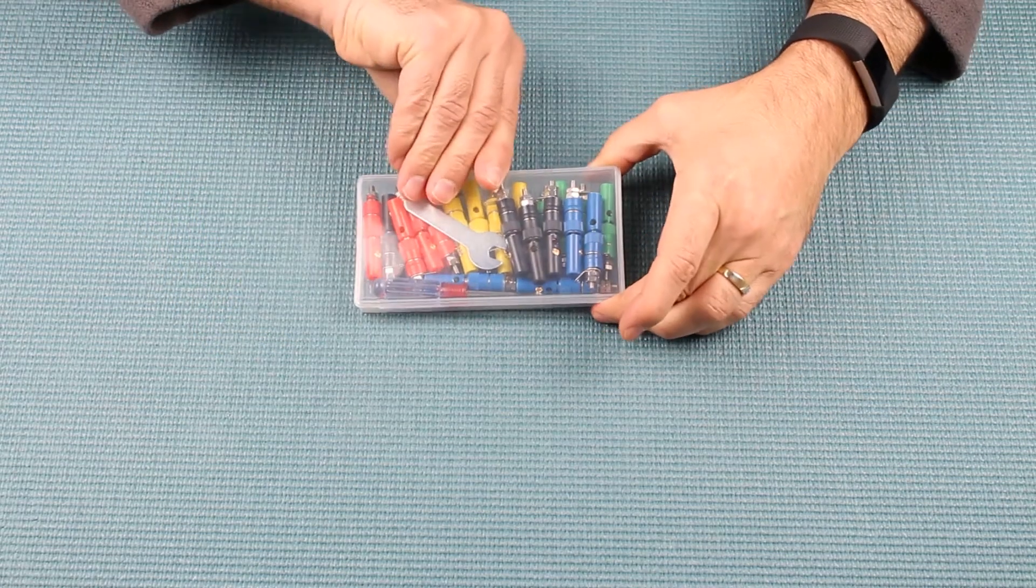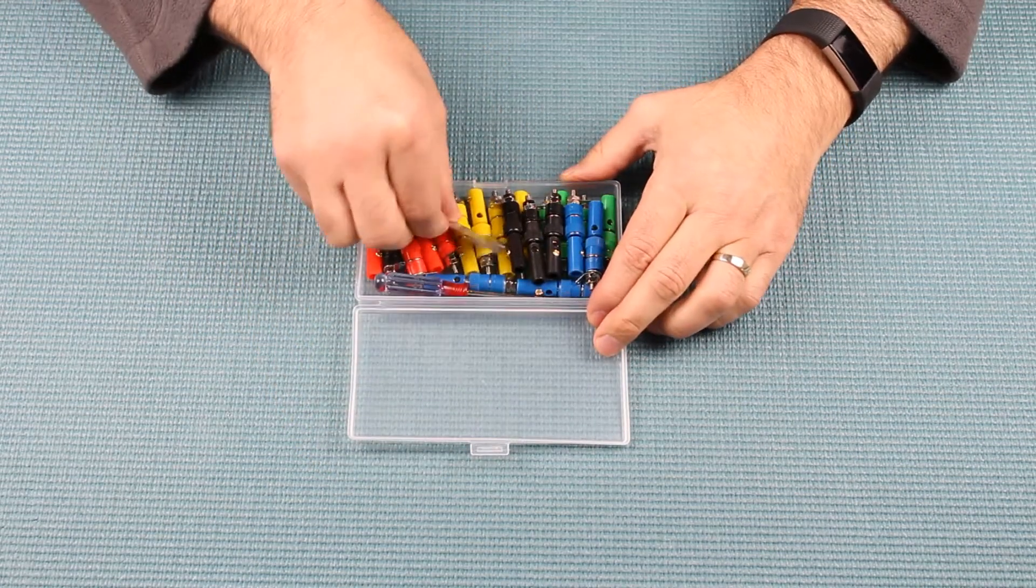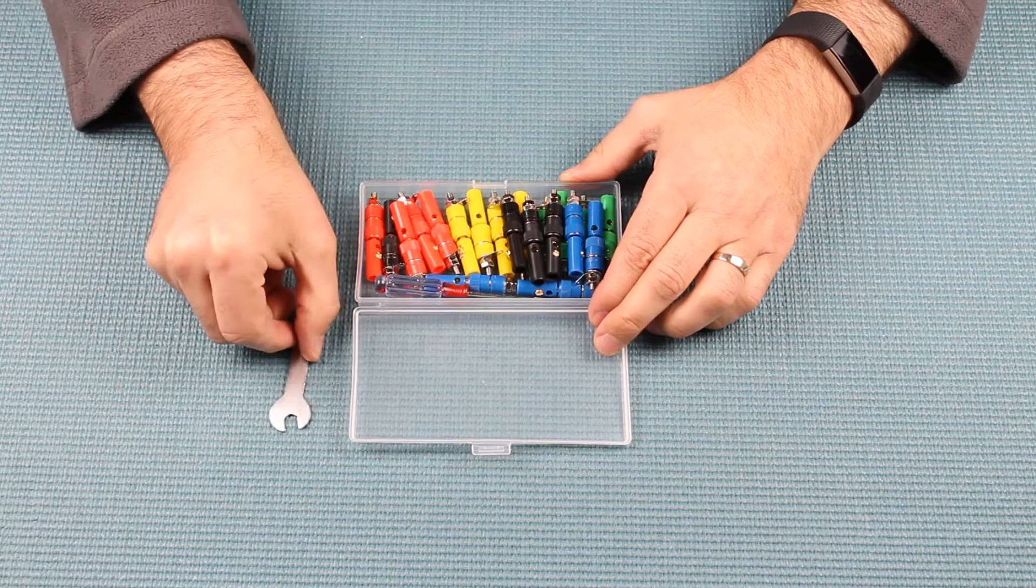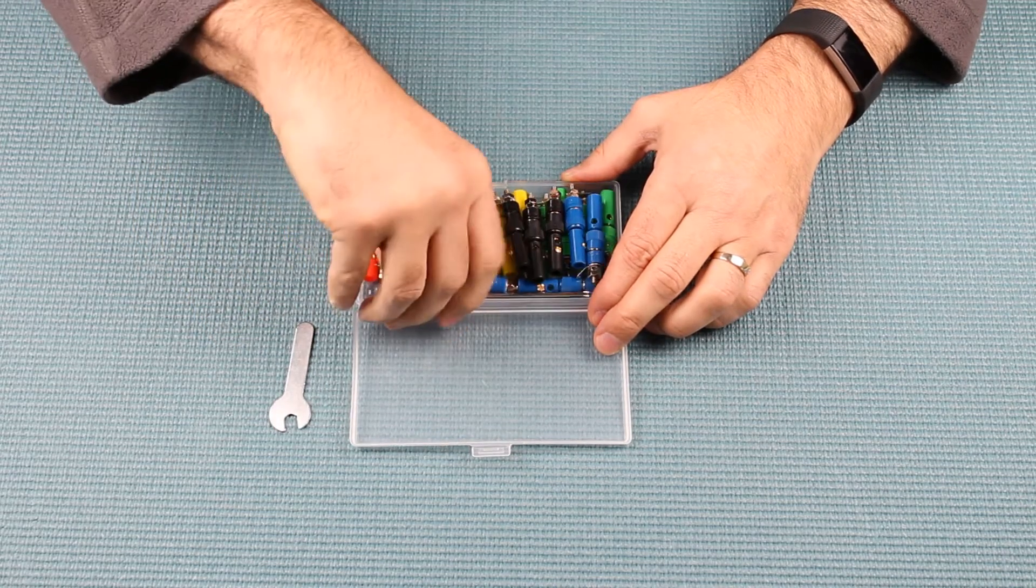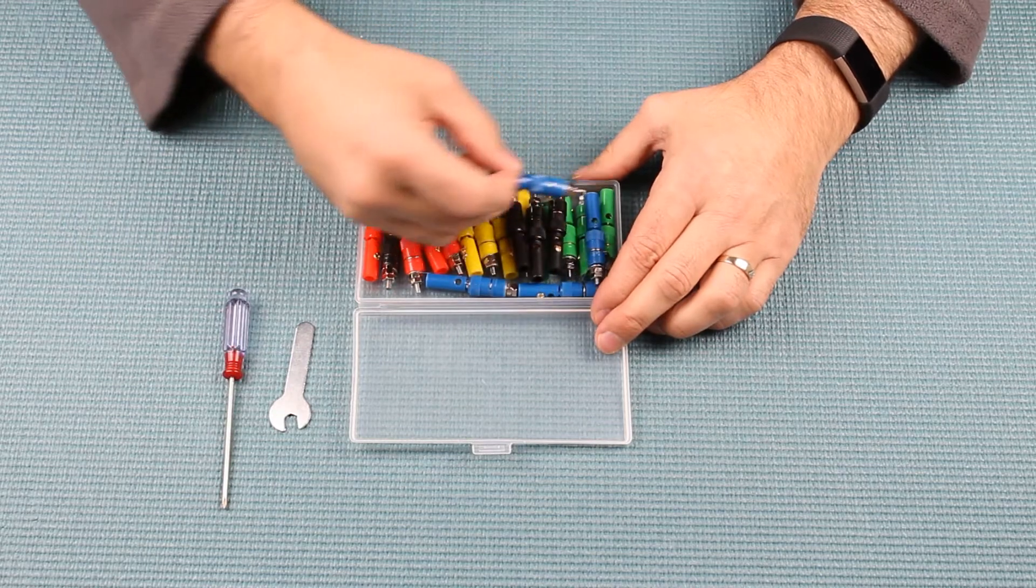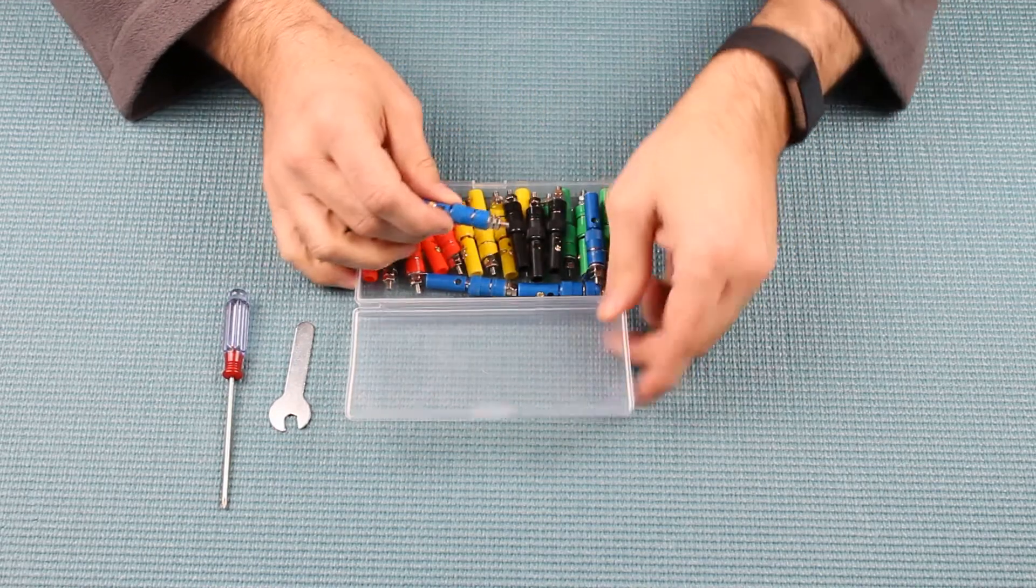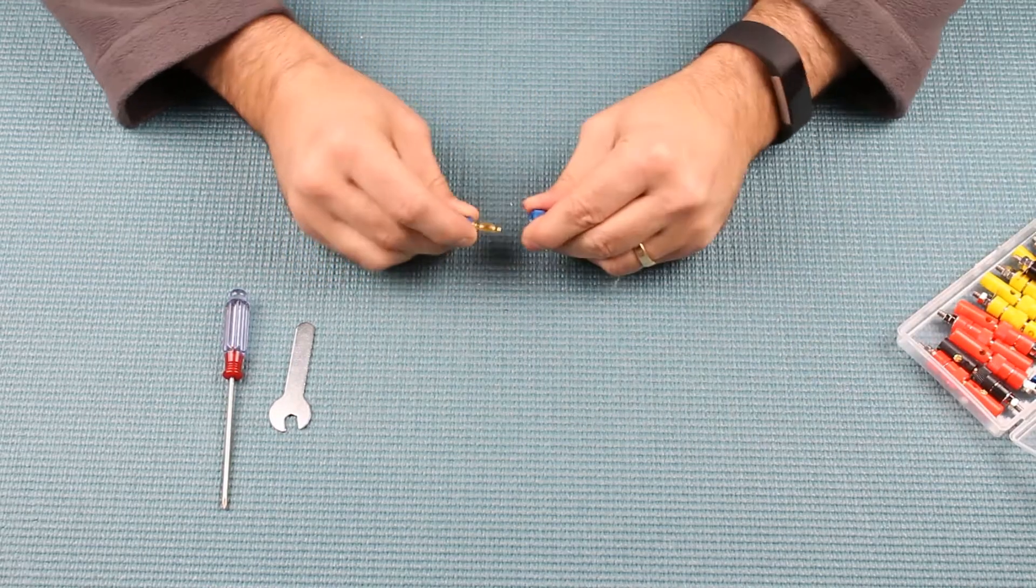I bought a pack of banana terminals to use in this project because there are four different colors and four of each color. A wrench for mounting as well as a small Phillips screwdriver is included in the case. Let's disassemble one of these terminals and see what it's like.